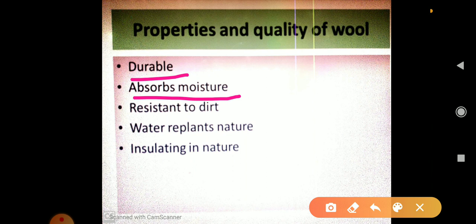Next is resistant to dirt. Wool fibers have an outer layer of scales that reduce the ability of dirt and dust to penetrate the fiber.